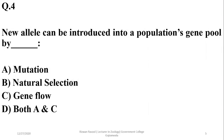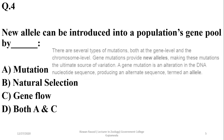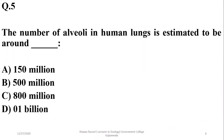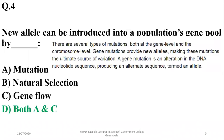Question 4: A new allele can be introduced into a population's gene pool either by mutation or gene flow. Mutations cause new alleles to arise in any population or location. Gene flow is also a source of new genes. Natural selection, however, acts on previous existing alleles.